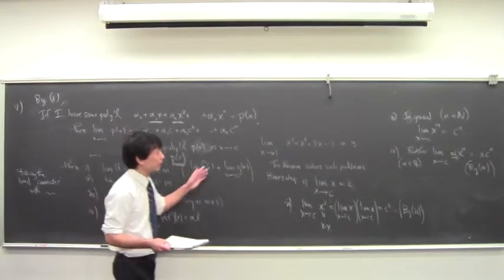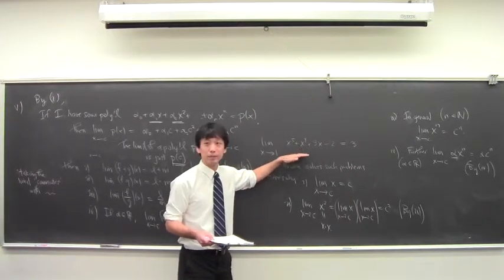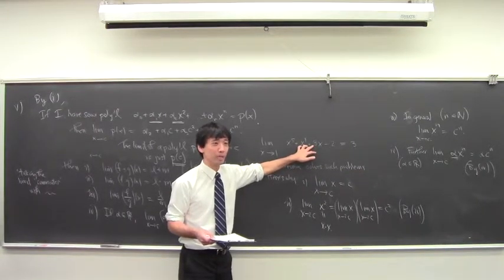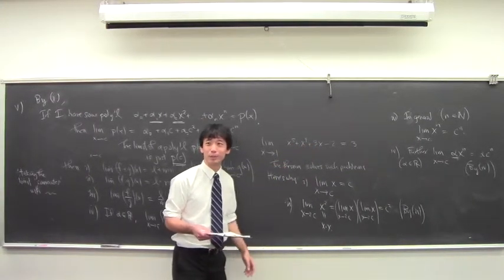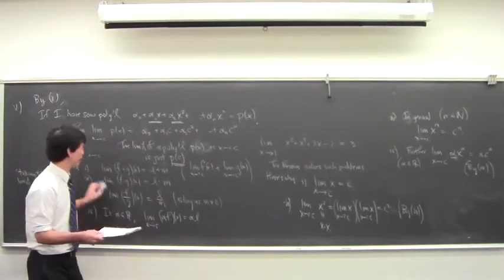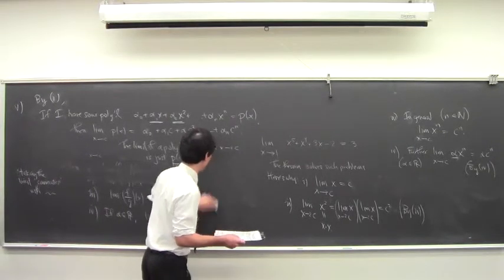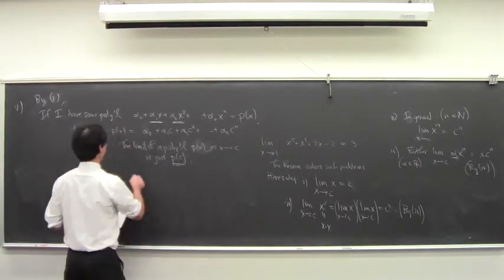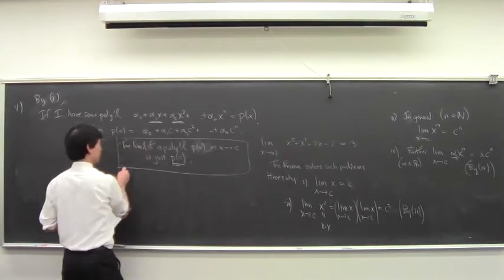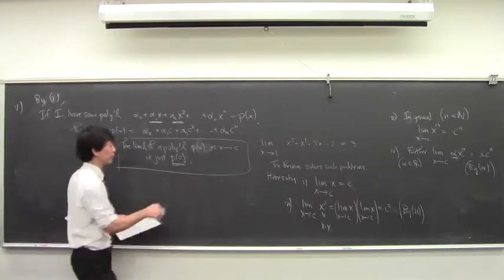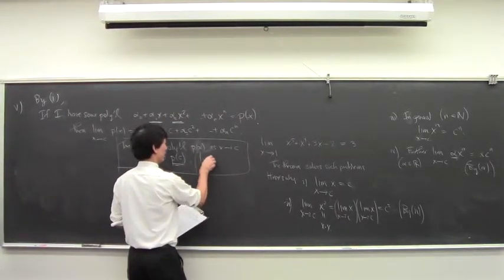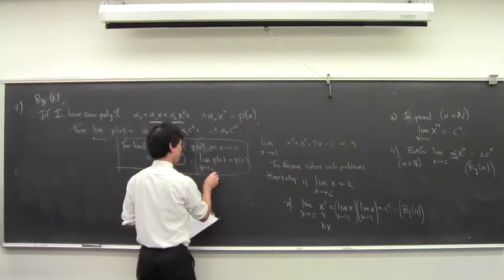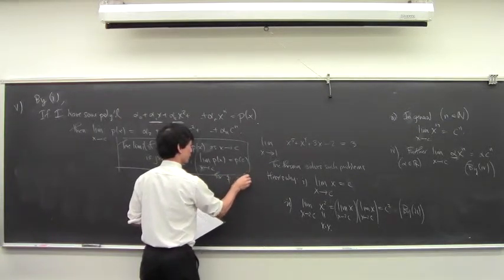This is great, because if we didn't have this theorem, we'd have to go through epsilons and deltas every time we saw a polynomial. But now we don't. So: the limit of a polynomial P is just P(c) for polynomial functions P.